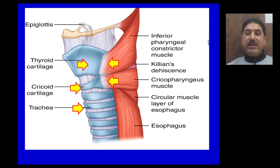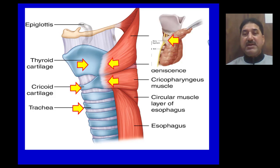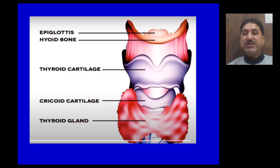What happens during swallowing? The inferior constrictor muscle of the pharynx contracts. Thyropharyngeus and cricopharyngeus move the thyroid and cricoid cartilages upwards, which in turn elevates the thyroid gland during swallowing. Here we can see a thickening from the false capsule of the thyroid gland called the ligament of Berry. It is the attachment of the ligament of Berry to the trachea which is responsible for its movement during deglutition.